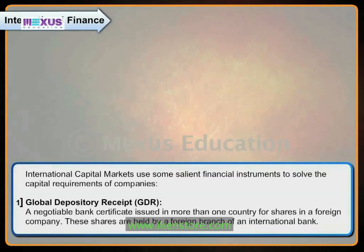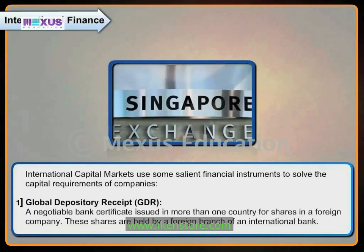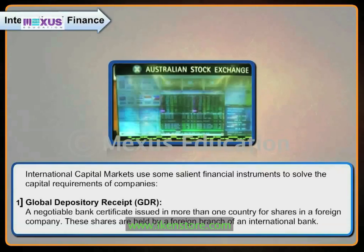International capital markets use some salient financial instruments to solve the capital requirements of companies. Global Depository Receipt or GDR: a negotiable bank certificate issued in more than one country for shares in a foreign company. These shares are held by a foreign branch of an international bank.